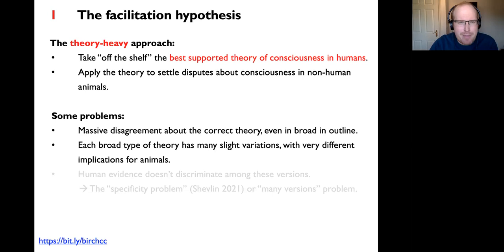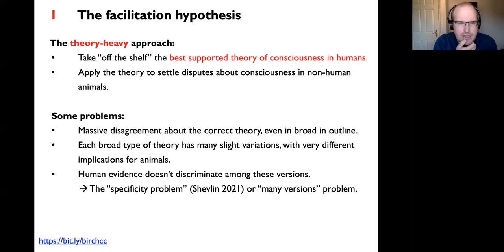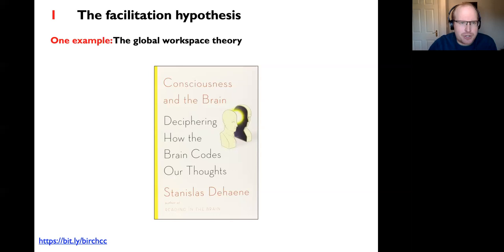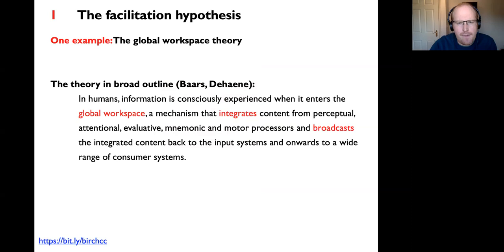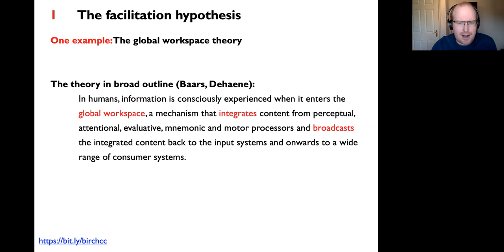An arguably deeper problem is that even if the field reached consensus about the broad type of correct theory—say, that Global Workspace Theory is right—there'd still be many slight variations of that theory with very different implications for animals, such that human evidence doesn't discriminate among these versions. This is what Henry Shefflin in a recent paper calls 'the specificity problem.' We can illustrate that with Global Workspace Theory, one of the most popular current theories.